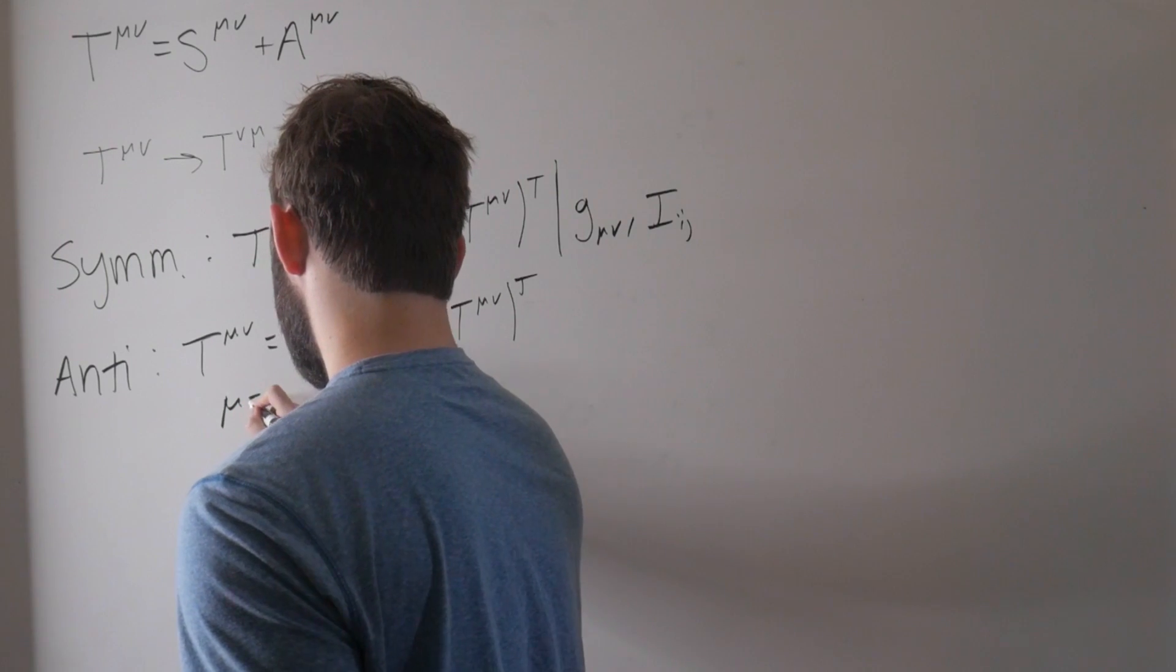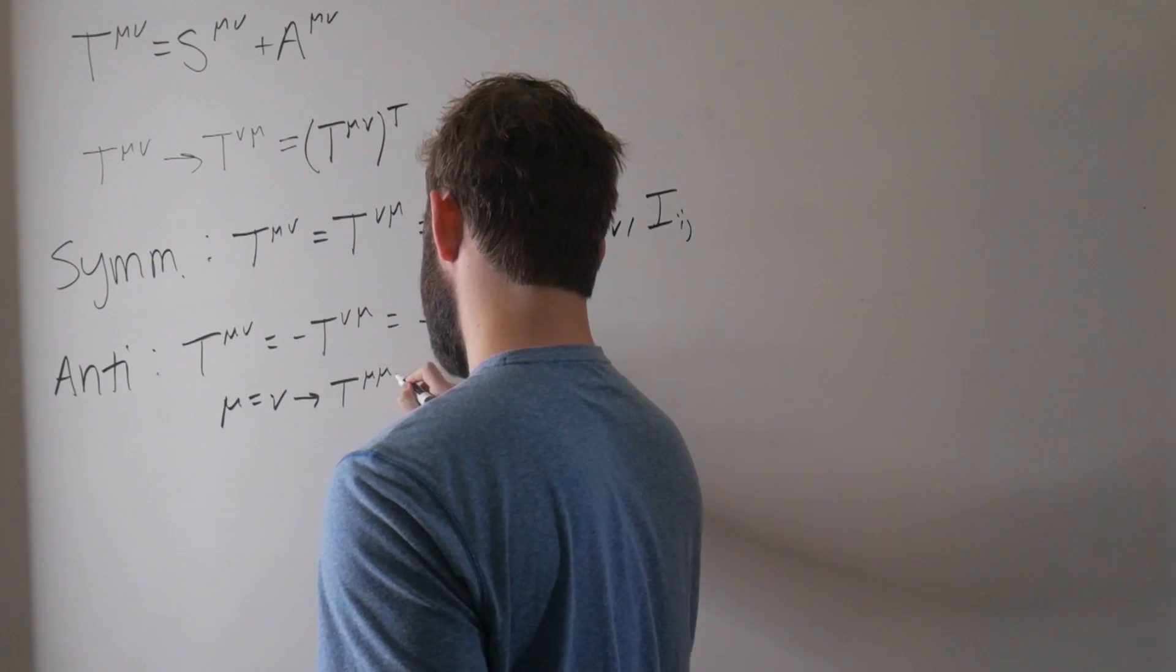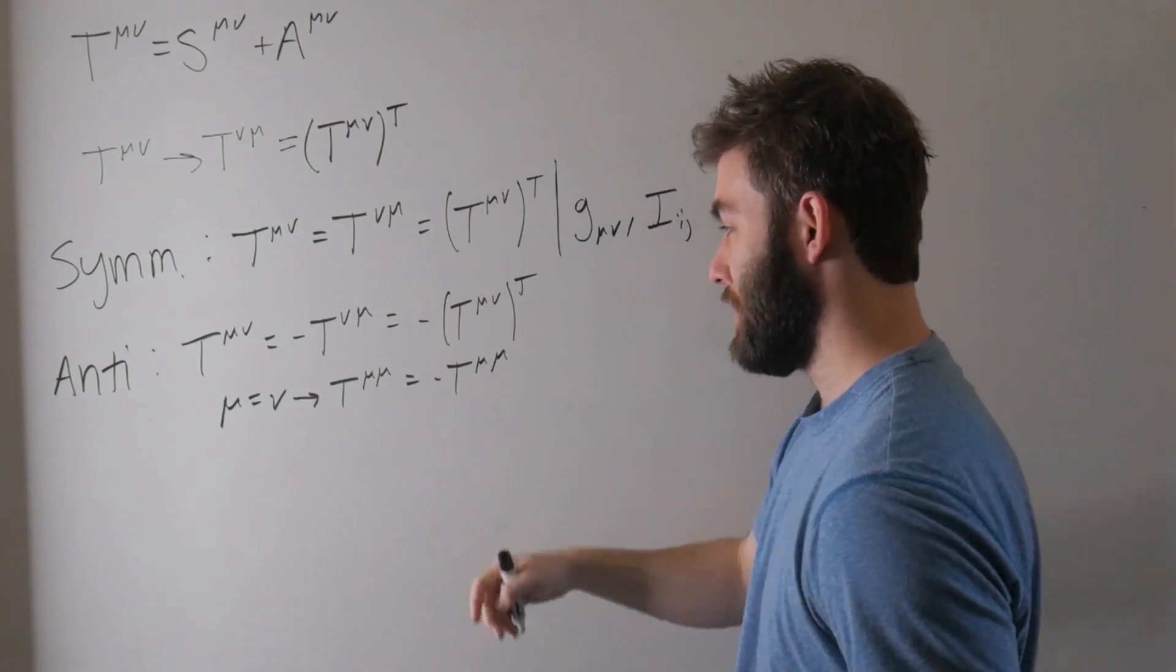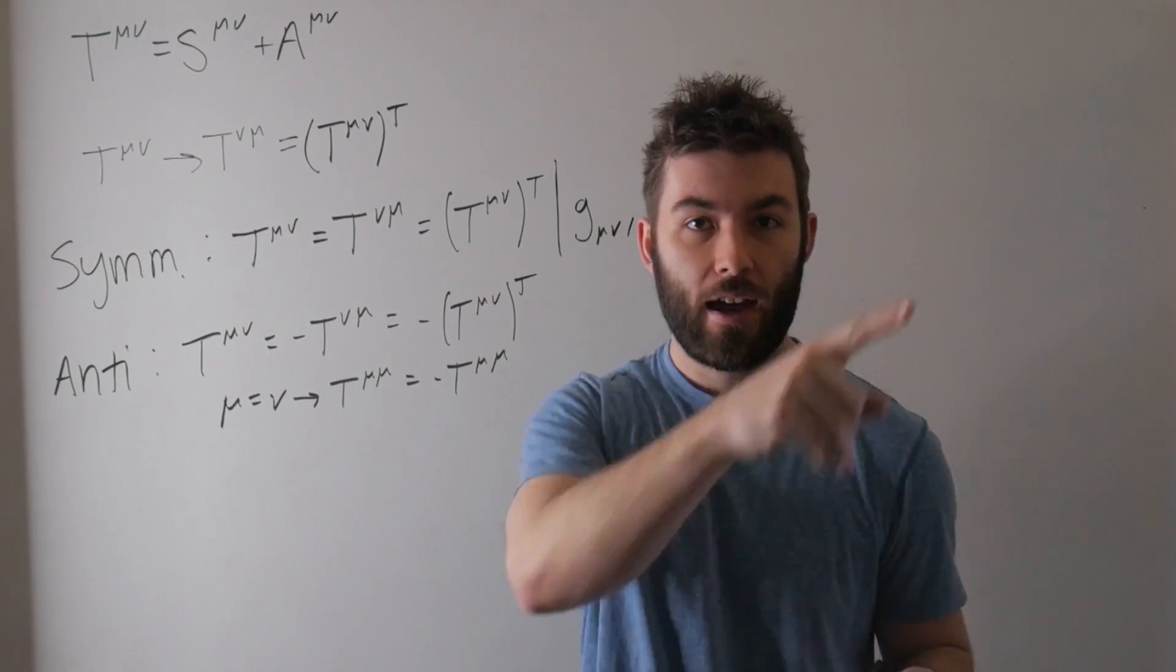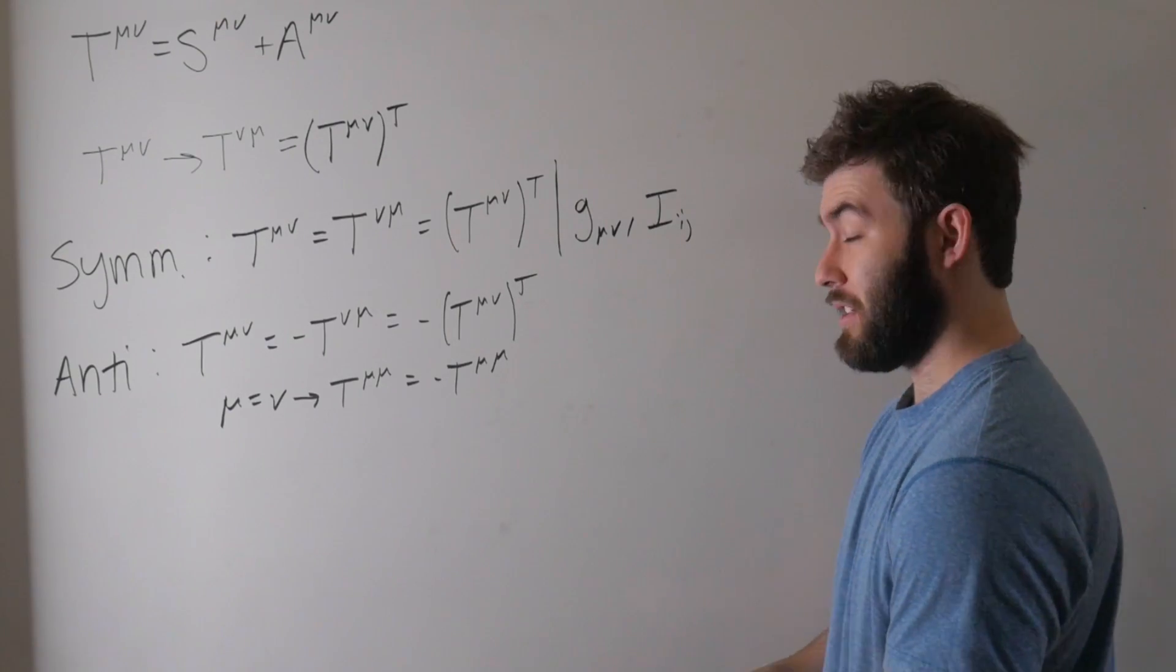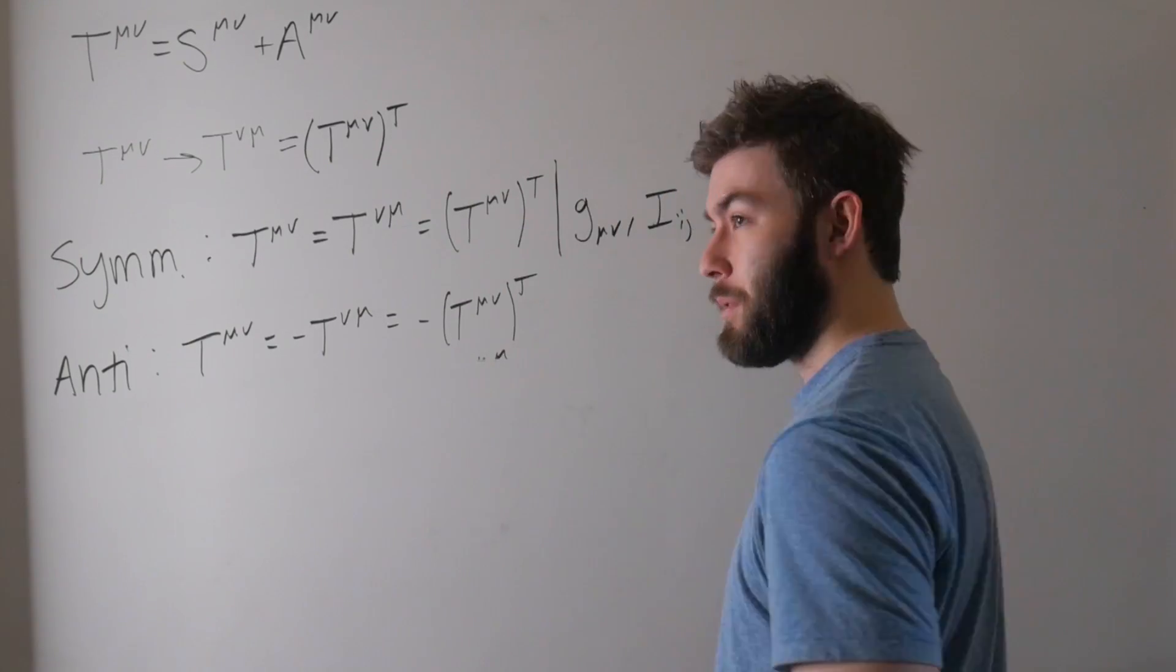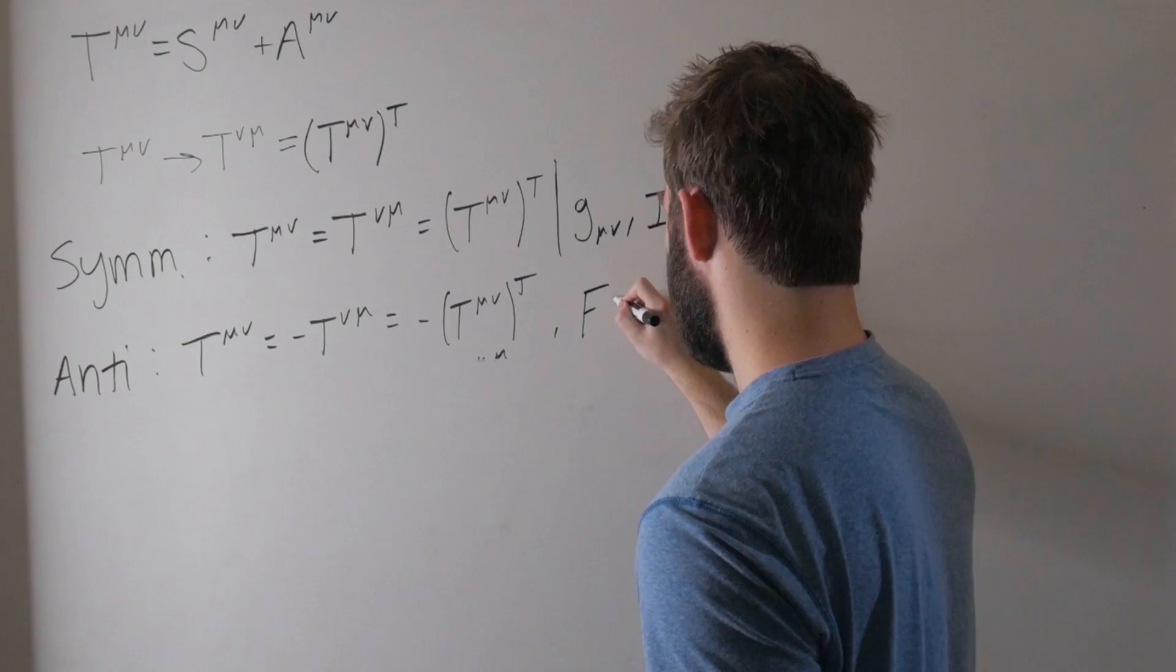So for μ equal to ν, we're saying that T_μμ is equal to minus T_μμ, and that can only be true if these matrix elements are zero. So that's why with antisymmetric tensor, you get a diagonal of zeros when you work with them in some matrix representation. Well, actually, in general, because you don't have to impose them onto a matrix. An example of an antisymmetric tensor would be like the electromagnetic field strength tensor, F^μν.